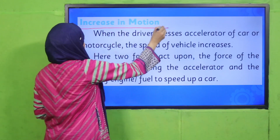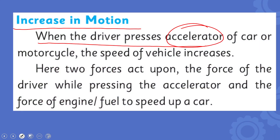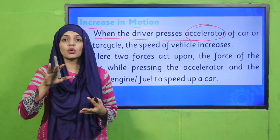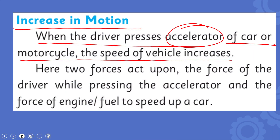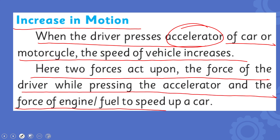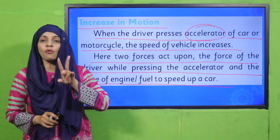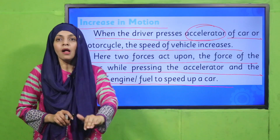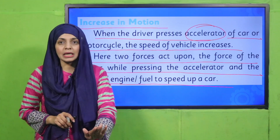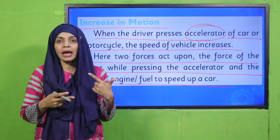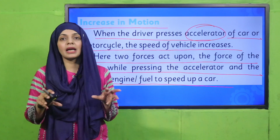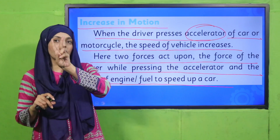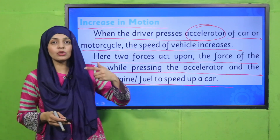Let's have a look. Increase in motion: when the driver presses the accelerator — the accelerator is at the bottom of the car, and pressing it makes the car move — the speed of the vehicle increases. Here, two forces act: the force of the driver pressing the accelerator, and the force of the engine fuel to speed up the car. So when the driver puts his foot on the accelerator and presses it, the machinery starts working, and because of the engine, the car or motorbike starts moving. There are two types of forces working — one is human force and another is machine force.